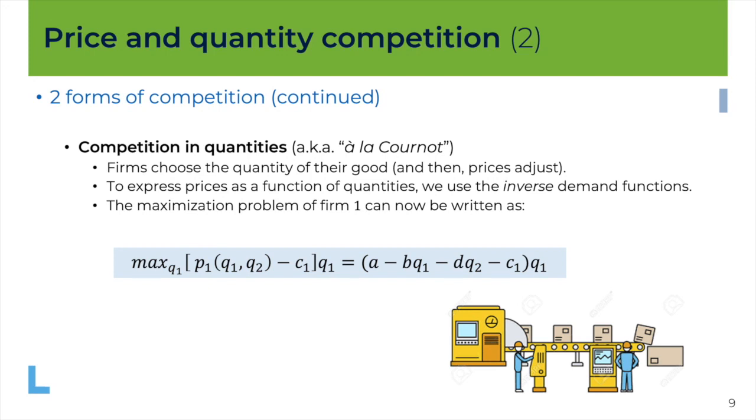So what is chosen by the firms here is the quantity. And if we want to analyze this problem, well we need to do the reverse of what we did before. So we want to express the profit function of the firms only as a function of the quantities. Because quantities, actually the prices will adjust to quantities.